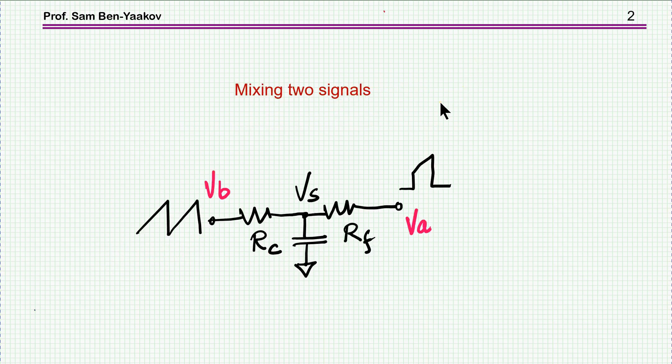So let me start with a short background. The problem that I'm referring to here is mixing two signals. Suppose you have a signal like this, a triangular signal. There is a pulse like this. You'd like to mix them together in an analog way.